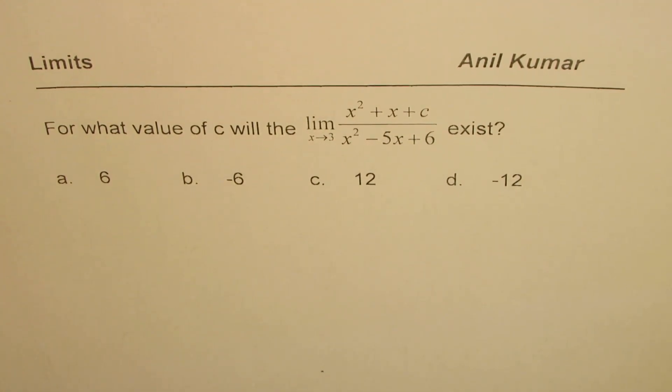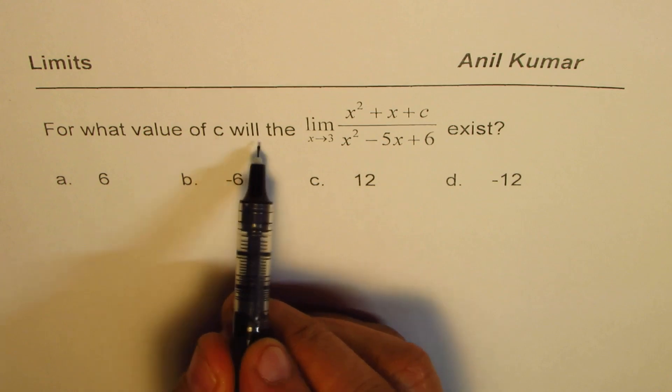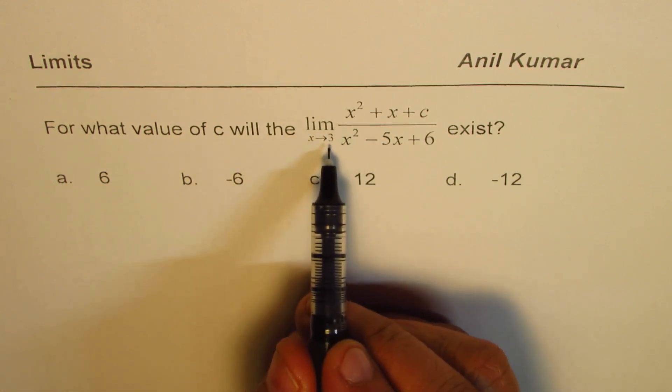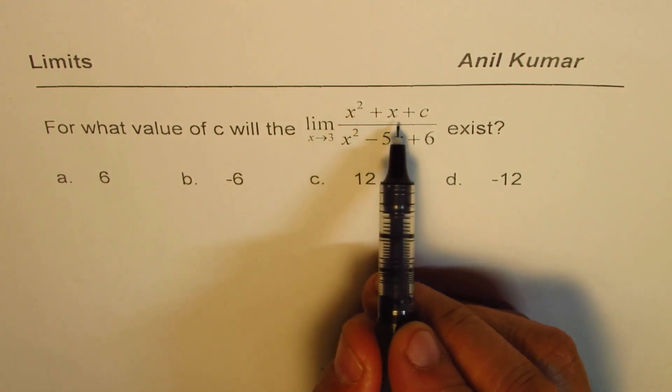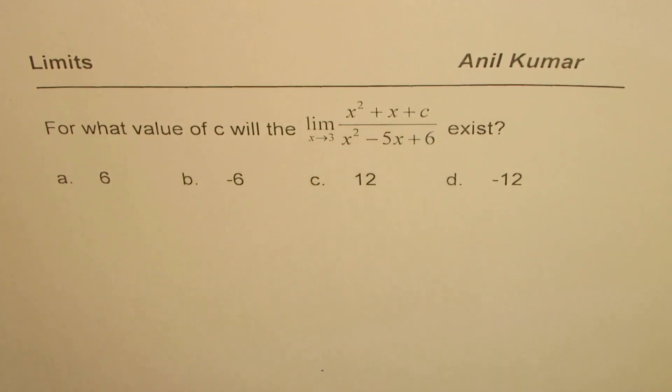I'm Anil Kumar and here is a multiple choice test question for you on limits. The question is, for what value of c will the limit as x approaches 3 for x squared plus x plus c divided by x squared minus 5x plus 6 exist? C is a constant. Four options given to you are 6, minus 6, 12, minus 12.